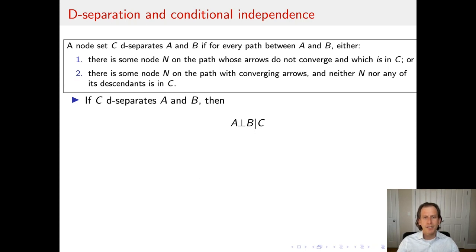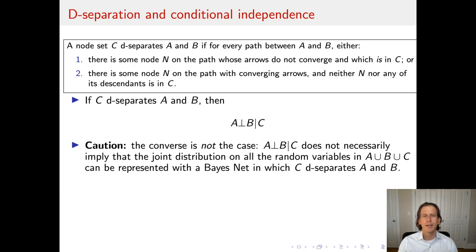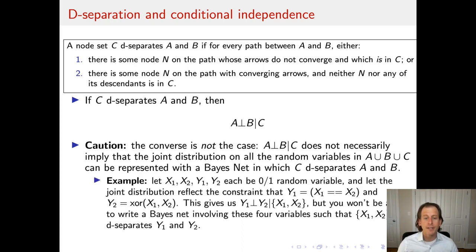If C D-separates A and B, then A and B are conditionally independent given C. However, I want to caution you that the converse is not the case. A being conditionally independent from B given C does not necessarily imply that the joint distribution can be represented with a Bayes net in which C separates A and B.